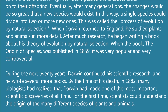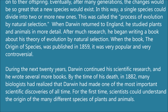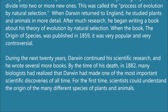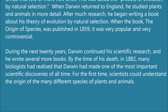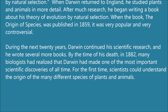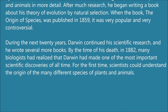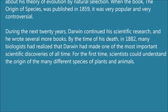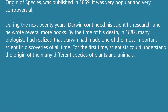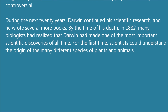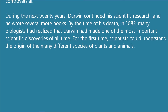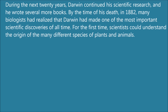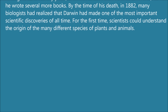When Darwin returned to England, he studied plants and animals in more detail. After much research, he began writing a book about his theory of evolution by natural selection. When the book The Origin of Species was published in 1859, it was very popular and very controversial. During the next 20 years, Darwin continued his scientific research, and he wrote several more books. By the time of his death in 1882, many biologists had realized that Darwin had made one of the most important scientific discoveries of all time.